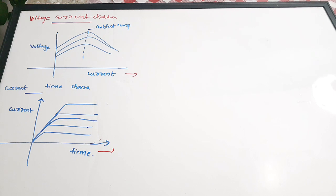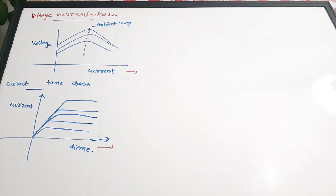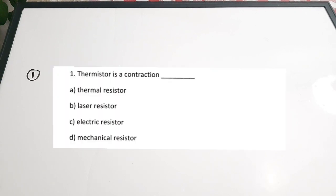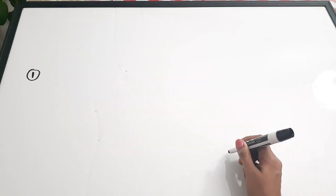Next we are going to see some important questions connected to thermistors — especially from an exam point of view. First question: 'The thermistor is a contraction of dash.' Options: A) thermal resistor, B) laser resistor, C) electric resistor, D) mechanical resistor. Correct answer is option A — it is a contraction of thermal resistor.